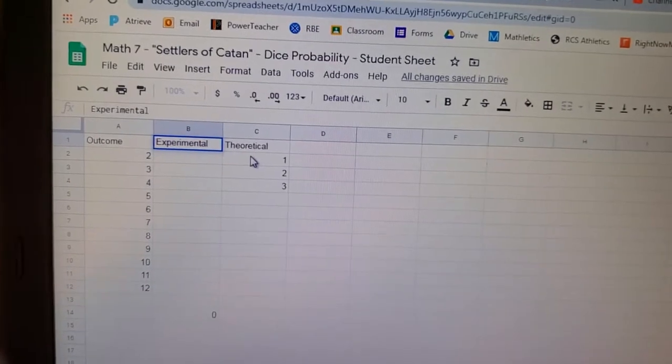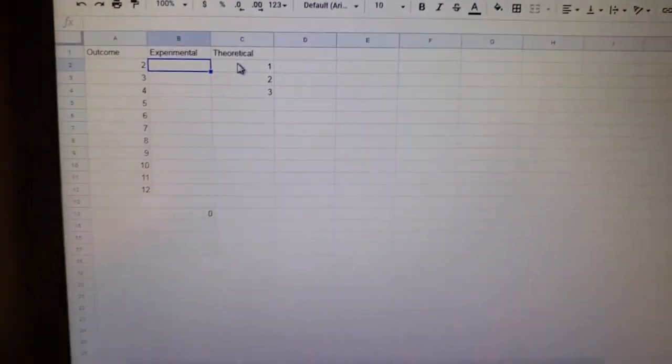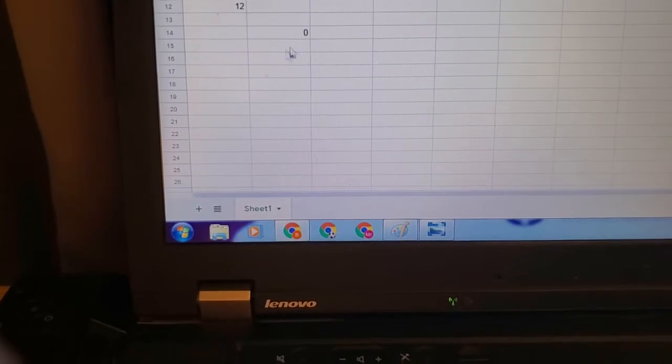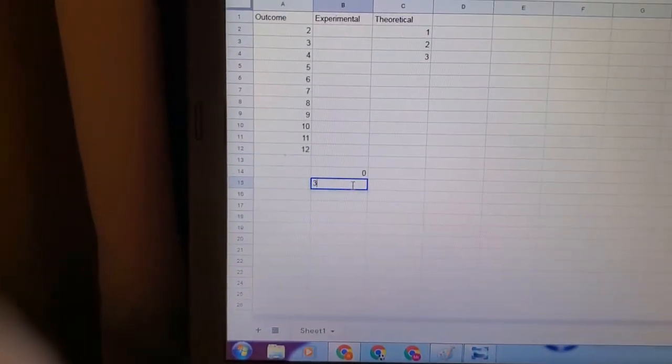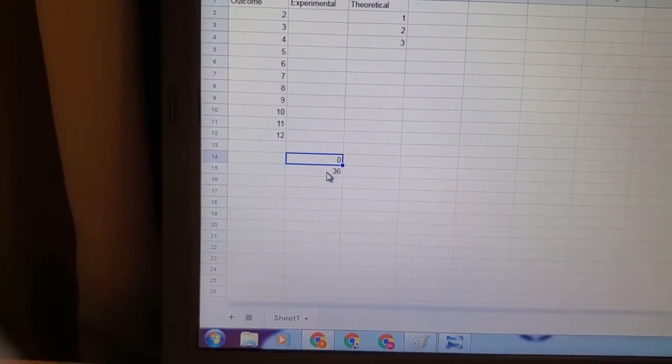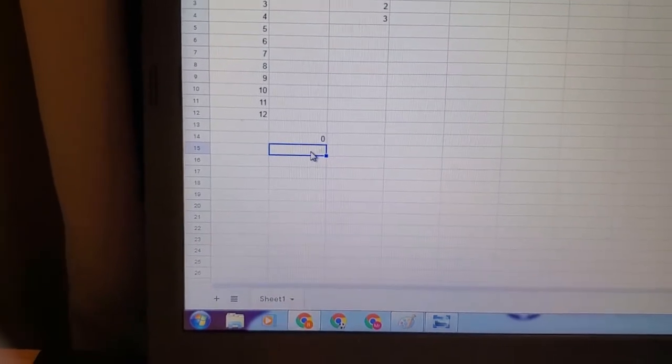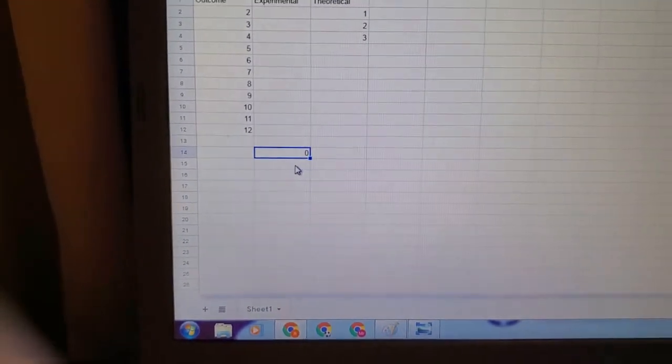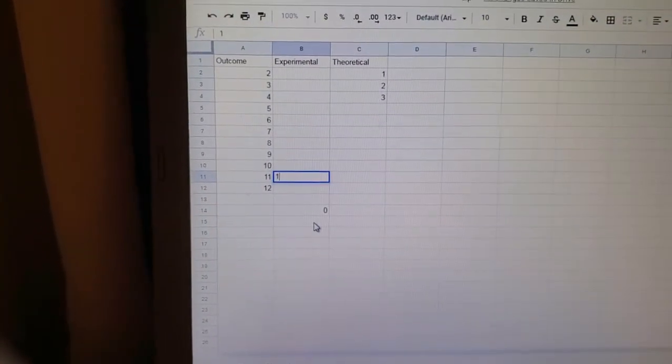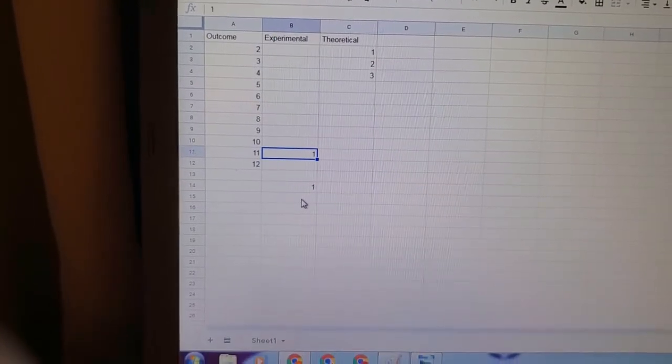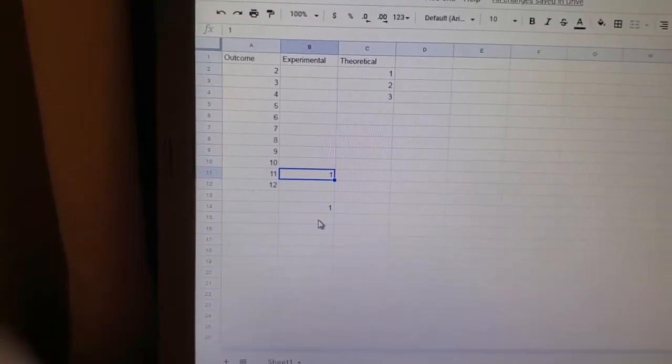I want you to actually take the dice, and you're going to go until the number right here, where the zero is, equals 36. It's going to automatically add it up as you go.